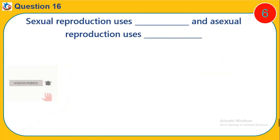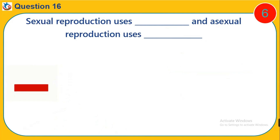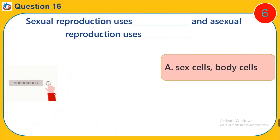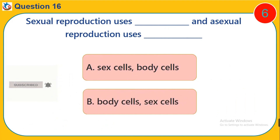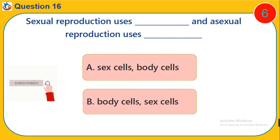Question 16. Sexual reproduction uses blank and asexual reproduction uses blank. A. Sex cells, body cells. B. Body cells, sex cells.